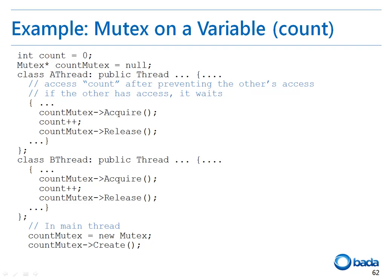This sample code shows how to synchronize the variable count using a mutex. As you can see in the last part of the code, the main thread creates a mutex. If a thread needs to access the variable count, the thread must acquire the mutex first. As long as the mutex is acquired by a thread, other threads cannot acquire the mutex. Then the value of the variable count is changed and then the mutex is released.